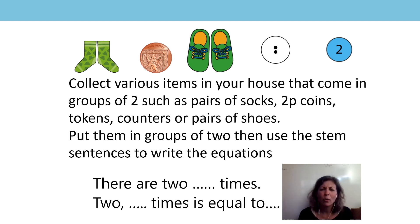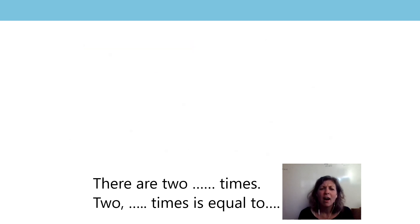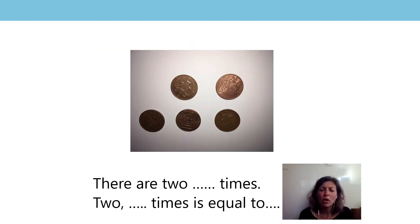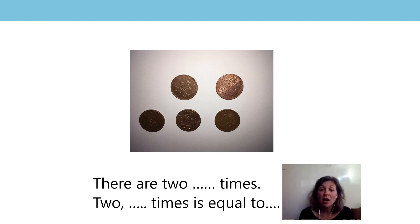I found lots of 2p coins in my house. Here there are two, five times. Two five times is equal to ten.